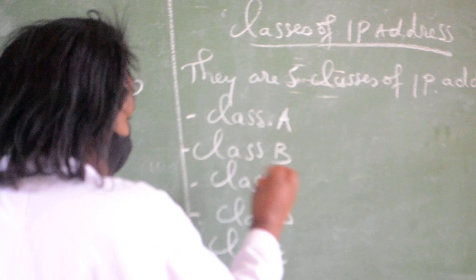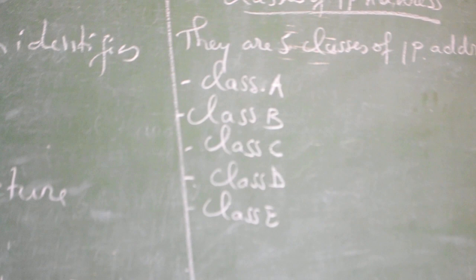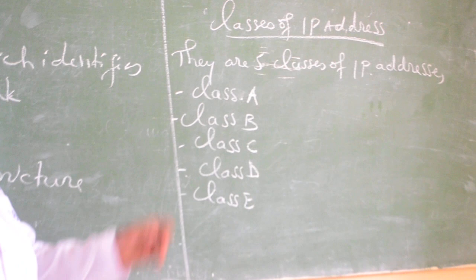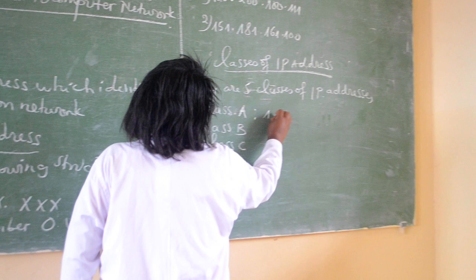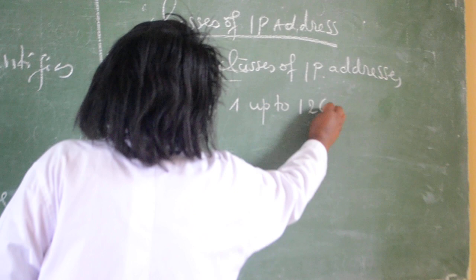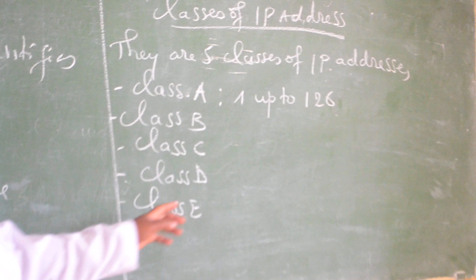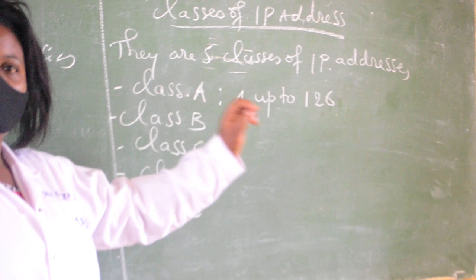You can ask yourself, how can I know the classes of each IP address? Each class has its own range. For example, class A starts from 1 up to 126. If IP address started by number between or from 1 up to 126, it is a class A IP address.